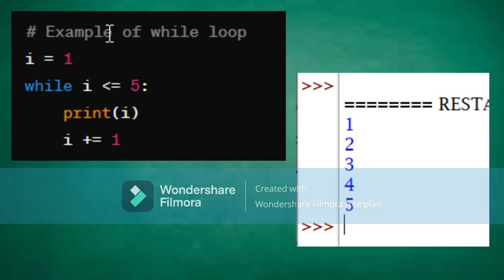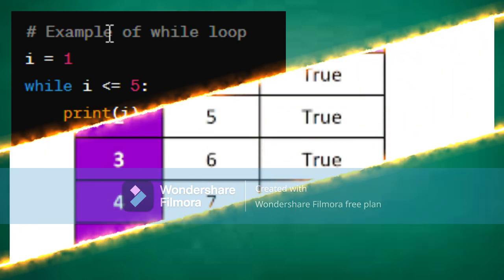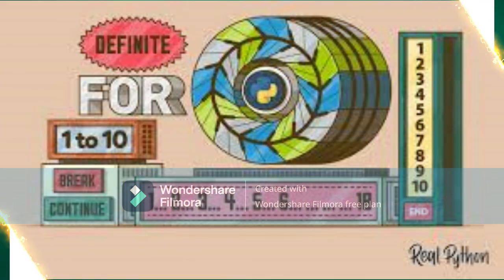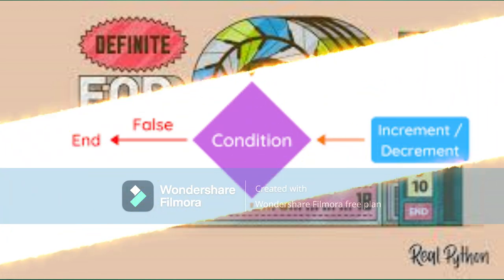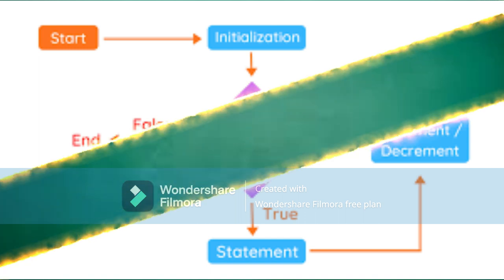Understanding iteration is key to mastering loops. It refers to the process of repeating a set of instructions a specified number of times. To determine the number of iterations a loop will have, you can use various methods such as counting the elements in a sequence or calculating based on specific conditions. We'll explore this concept further in future lectures.